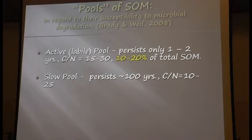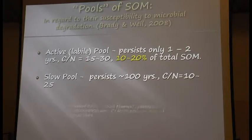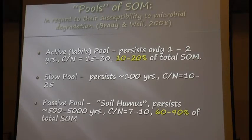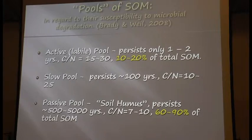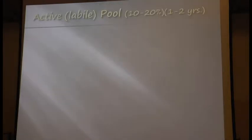The slow pool is the intermediate term, measured on the order of perhaps 100 years. And then the passive pool is the more interesting one — that's where the soil humus is. That's the pool that persists for a long time, measured on the order of centuries to millennia. I'll go into more detail on what these are.